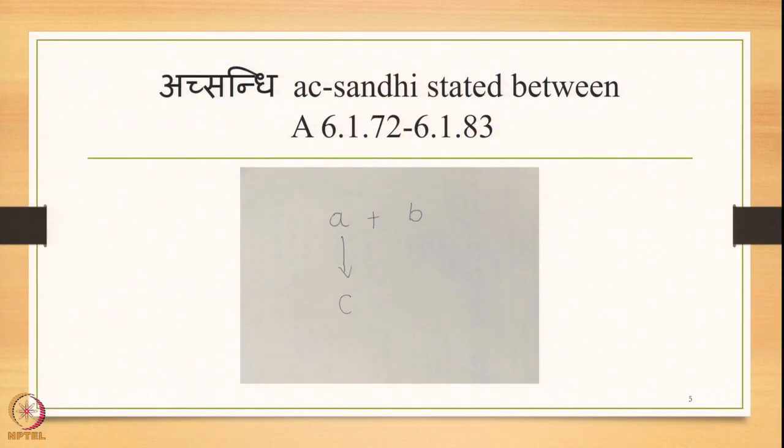We studied the sutra Echoyavayavaha. We also studied the Uddeshya Vidhaya Bhava and then various examples — many of which we noted are artificial, but there is nothing we can do about it. The Ekasthanika Ekadesha type of Ach Sandhi is stated in this section of the Ashtadhyayi, from 6.1.72 onwards up to 6.1.83.